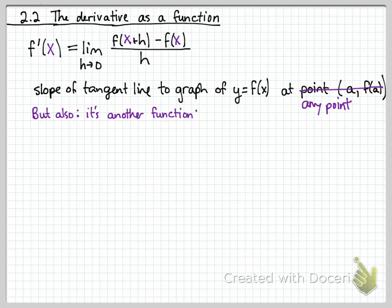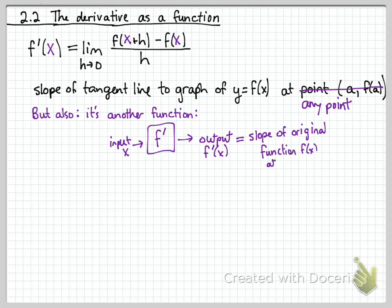But not only that, notice that this thing is a function. It's got an input, you give it an x, and an output, it produces an f prime of x. That output, by the way, tells you the slope of the original function at whatever x value you put in.